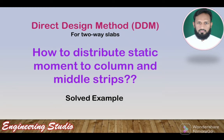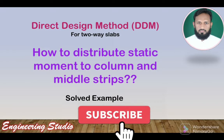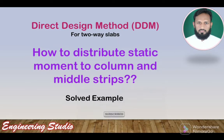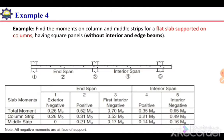Bismillah ar-Rahman ar-Rahim. Assalamu alaykum. I am Dr. Muhammad Tahir and you are watching my YouTube channel Engineering Studio. In the last two videos we discussed the distribution of static moment into column strip and middle strip. In this video we will solve one example to show how we can calculate the moments at column strip and middle strip, and how we can select the moment coefficients from the ACI code.